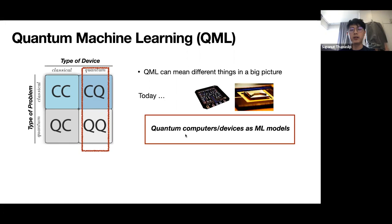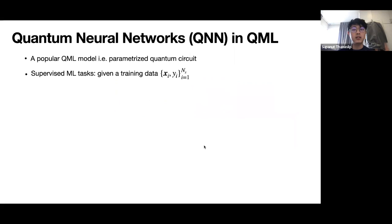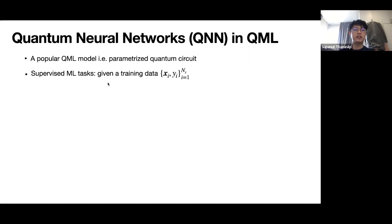The reason we want to consider this is we hope that by using quantum computers as machine learning models, we might be able to achieve better accuracy compared to conventional classical machine learning models. The model we use in this study is quantum neural networks in QML — a popular quantum model used not only in QML but also in VQA. Roughly, you can think of a QNN as a parameterized quantum circuit where you have some evolution with parameters you can tweak. The machine learning task we consider is supervised learning, though results may extend to unsupervised learning as well.